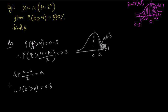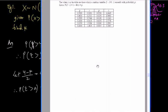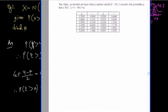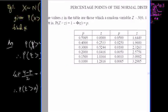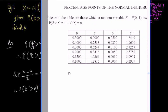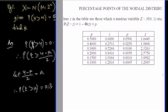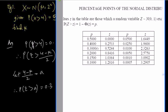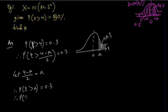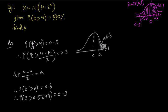For this type of sum, we don't have to look up the usual table. We move on to the special table — the percentage table — which is a greater-than table. We are looking for the value of z where z is greater than something and the probability is 0.3. Since we are doing the opposite — we know the probability — if the probability is 0.3, then the value of z is going to be 0.5244. We got the value of a.